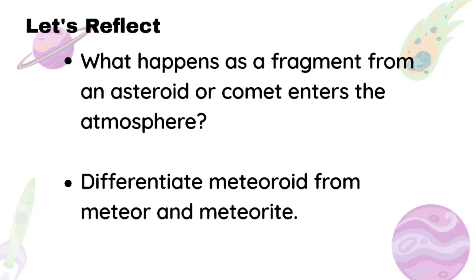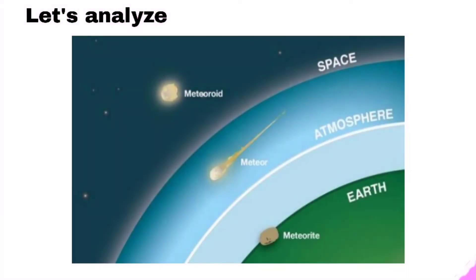Now let's reflect on what you have learned from our discussion. What happens as a fragment from an asteroid or a comet enters the atmosphere? Can you differentiate meteoroid from meteor and meteorite? Let's analyze the given picture. A meteor is a streak of light that occurs when a meteoroid burns up as it enters the Earth's atmosphere. A meteoroid from space enters the Earth's atmosphere; the air in front of it heats up and causes it to burn up. Then, when its fragments arrive and make it to the ground, it becomes a meteorite.